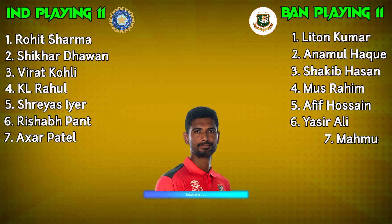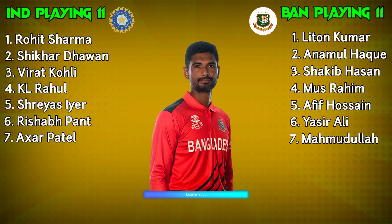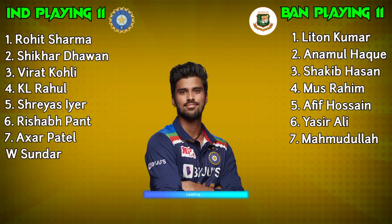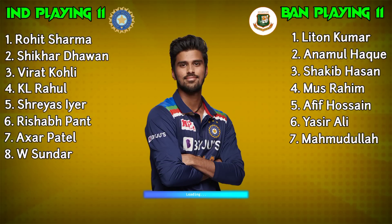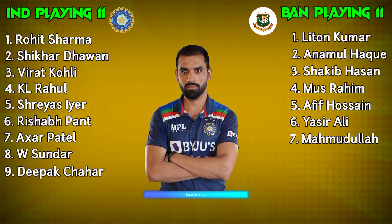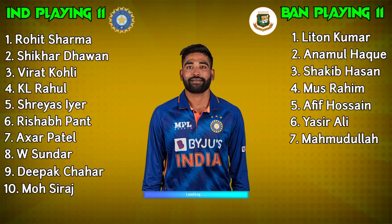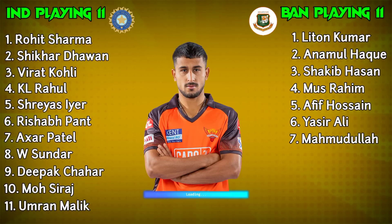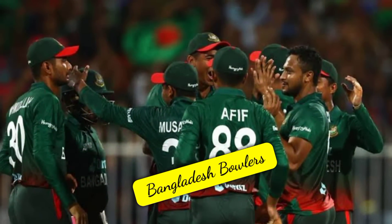Number 7: Mehidy Hasan Miraz, All-rounder. India team bowlers: Number 8: Washington Sundar, All-rounder. Number 9: Deepak Chahar, Fast Bowler. Number 10: Mohammed Siraj, Fast Bowler. Number 11: Umran Malik, Fast Bowler. Bangladesh team bowlers: